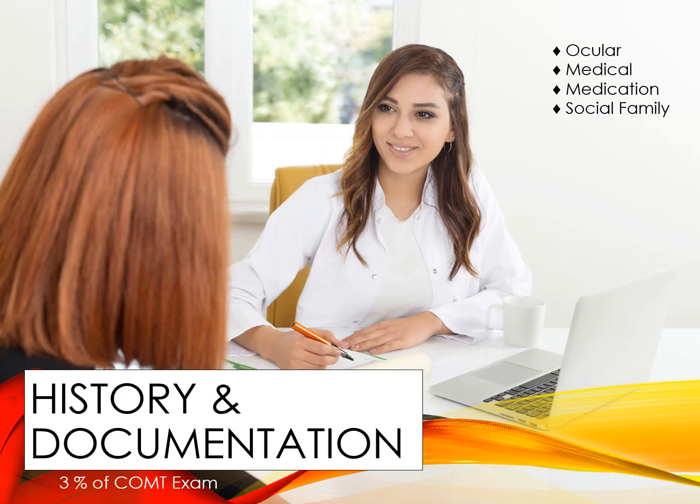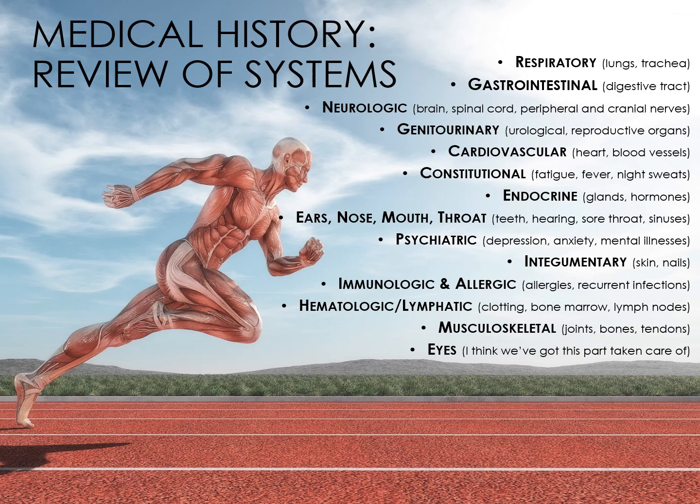Our first section is History and Documentation. Questions from this section will comprise approximately 3% of your exam. The Review of Systems is a list of questions arranged by organ system designed to uncover dysfunction and disease. It's important to understand that this Review of Systems is just one piece of the clinical puzzle. The patient's responses must be interpreted within the context of their findings, including their risk factors, their past history, and their exam findings.